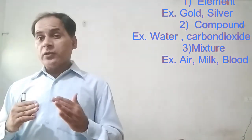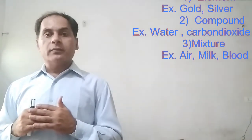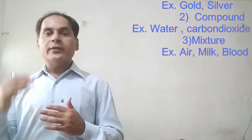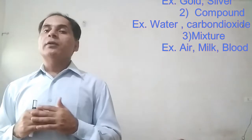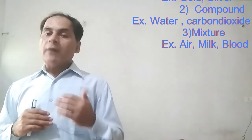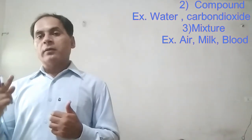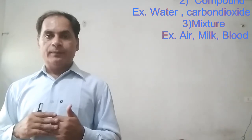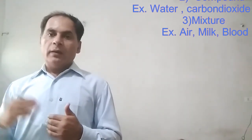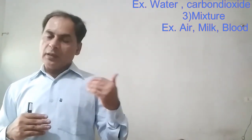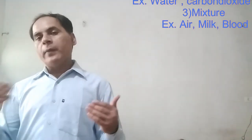But in a mixture, the ratio is not fixed — it is variable. For example, our blood is a mixture; two persons cannot have the same composition in their blood. Milk is a mixture — the composition of milk from one cow will be different from that of another cow. Soil is a mixture. Air is a mixture — a sample of air from one place will have a different composition from a sample taken from another place, because the ratio is not fixed in a mixture.